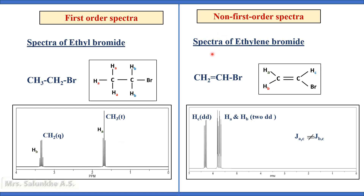In case of non-first order spectra, for example the spectra of vinyl bromide, CH2 double bond CHBr, there are three sets of protons: HA, HB, and HC. There are three sets because the coupling of the two CH2 protons is not the same as with the methine group proton. The coupling of HA with HC is a cis coupling, while the coupling of HB with HC is a trans coupling. Since the coupling is different, HA and HB have different coupling constants, and the spectra shows non-first order behavior. For HC, it first couples with HA and then with HB, therefore the signal splits into four lines and a double doublet is observed.